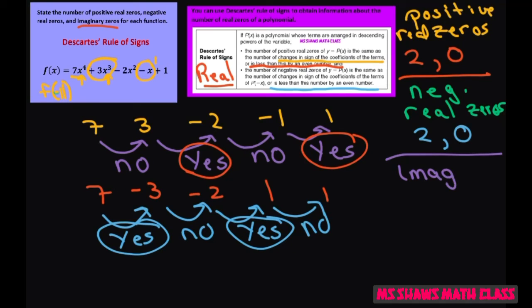Remember imaginary zeros come into twos. So that's both positive and negative. For example, if you have 3i as a solution, then also negative 3i as a solution.